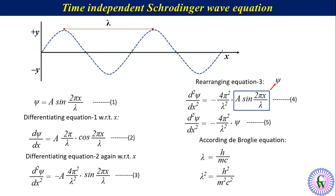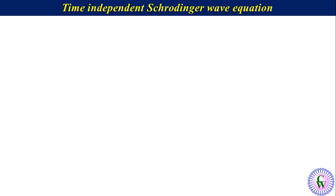Putting the value of λ² in equation 5 gives d²ψ/dx² equals minus (4π²m²c²/h²) times ψ.